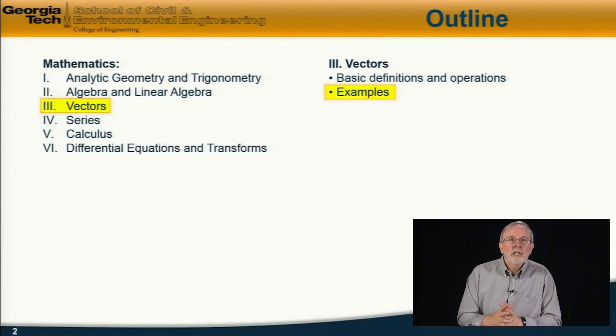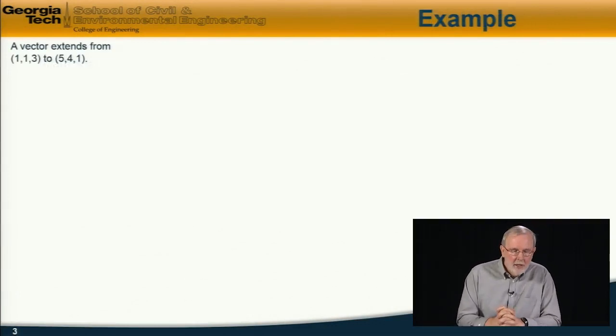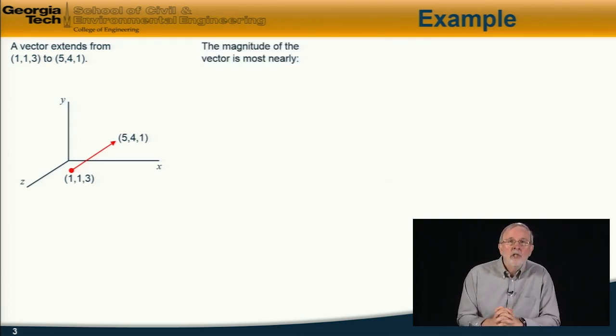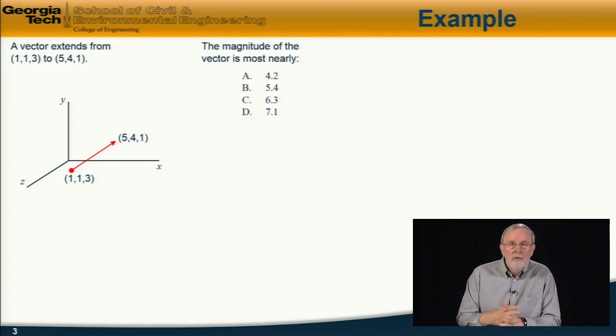Now let's do some examples on vectors. So first example, we have a vector which is extending from the points with coordinates 1,1,3 to 5,4,1. So this is what it looks like. A vector from 1,1,3 to 5,4,1. And a couple of questions on this. First of all, what is the magnitude of the vector between those two points? Which of these alternatives?